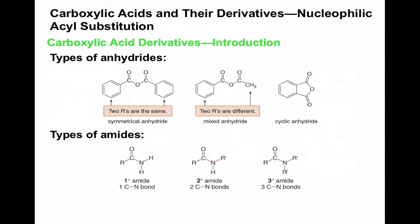Anhydrides are carboxylic acid derivatives. The name means 'without water' — they're formed by taking two carboxylic acids and bringing them together minus water. An anhydride looks like a double ester sharing a single oxygen. If you heat a carboxylic acid and drive the water off, you get an anhydride. That's how they originally made things like acetic anhydride. These are reactive intermediates that react with nucleophiles.